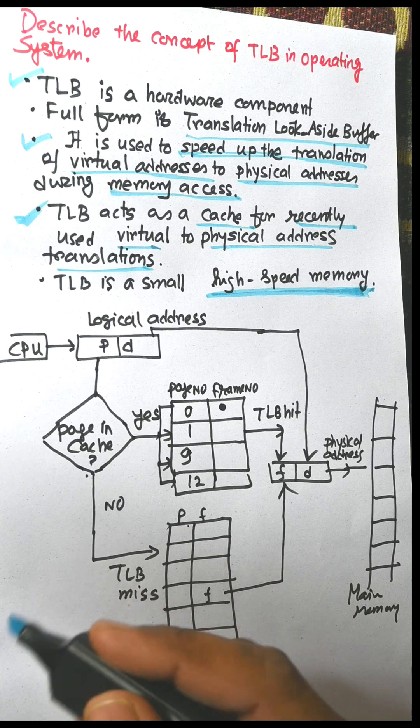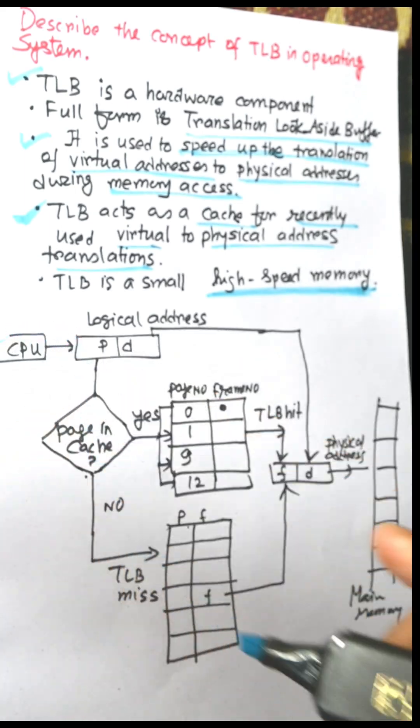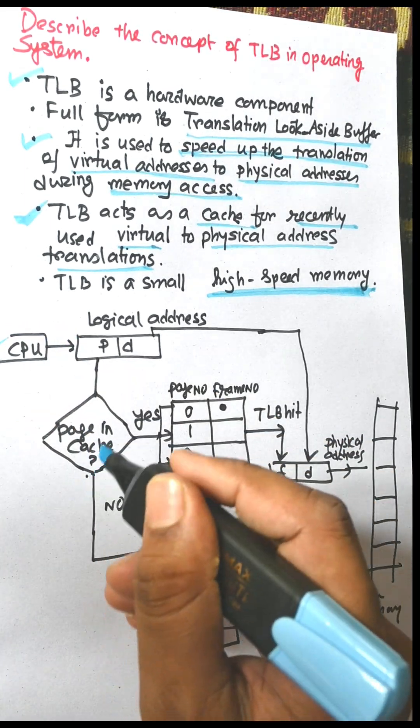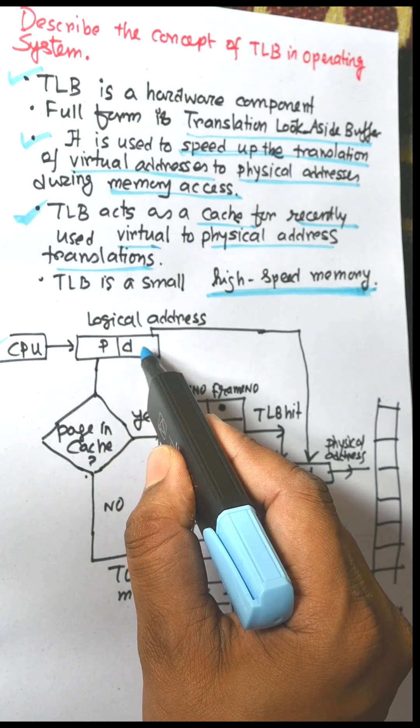Now consider the technique of TLB. We know the CPU generates a logical address which consists of two parts: one is page number and another is offset.